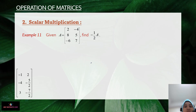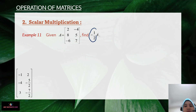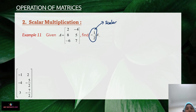Let's look at Example 11. Given matrix A, we need to find negative one-half times matrix A. Negative one-half is the scalar, so we multiply each element of matrix A by negative one-half.